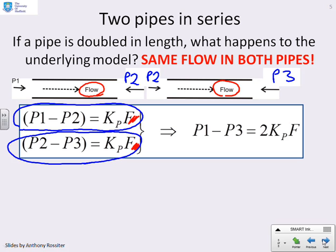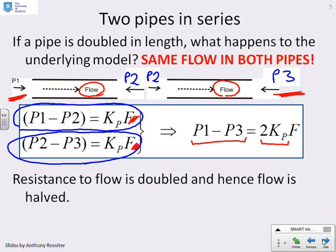Consequently, I can now combine these two equations together. What I can do in simple terms is just add them. And you'll see I get, therefore, p1 minus p3. So pressure at the left-hand end minus pressure at the far right. And here you see I get 2 kp into f. So the effective resistance has been doubled. So the resistance to flow is doubled, and hence the flow rate is half what it would have been if I had just a single pipe.